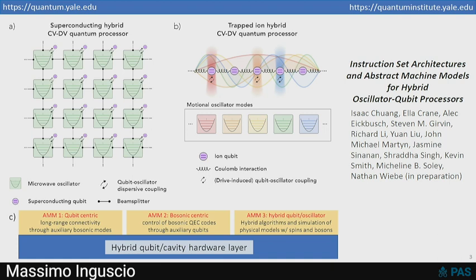You could abstract it into three different abstract machine models. One is qubit-centric, where the quantum information is in the qubits, and the communication and remote entanglement occurs through the bosonic modes, which are the communication buses. In the middle abstract machine model, it's bosonic-centric. You might put bosonic quantum error correction codes to carry the information in the oscillators, and you would use the qubits then as auxiliary controllers to manipulate those bosonic code words. Or you could present to the compiler the full hybrid system, in case you wanted to do simulations involving spins or fermions coupled to bosonic modes.